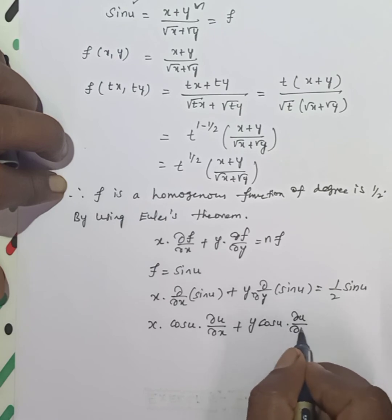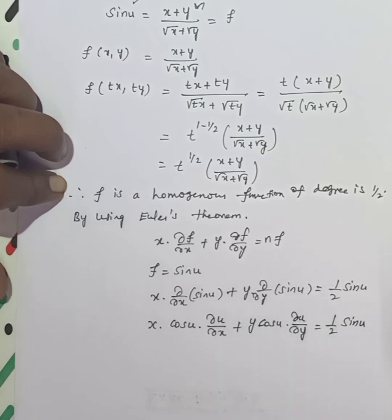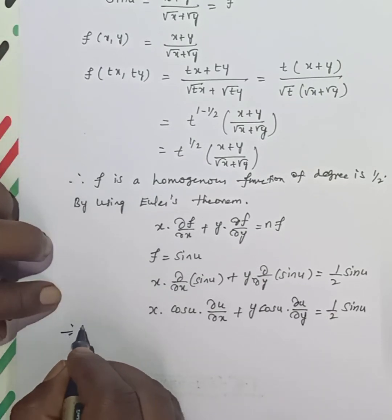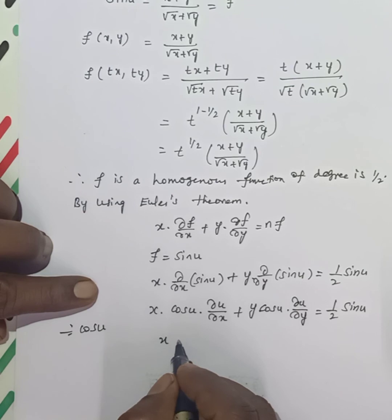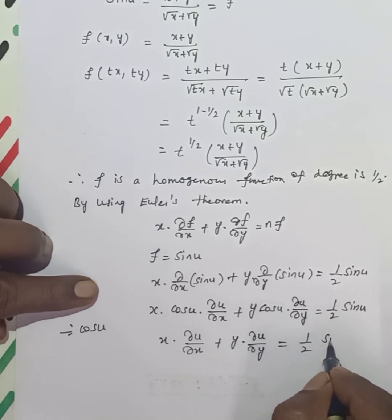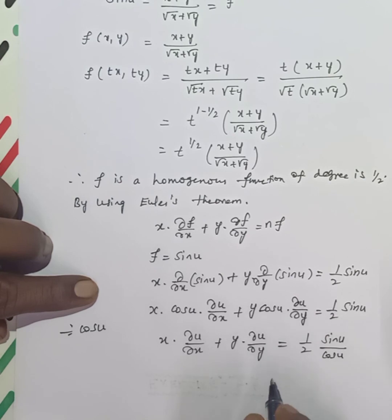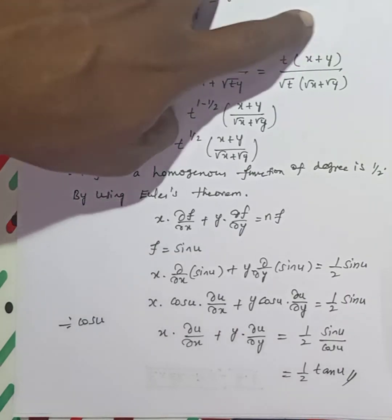Taking cos(u) as common on the left side and dividing both sides by cos(u), we get: x times ∂u/∂x plus y times ∂u/∂y equals one-half times sin(u) divided by cos(u). Since sin divided by cos equals tan, the result is one-half times tan(u). Hence proved.